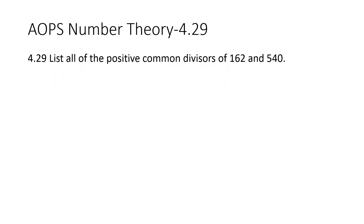ALPS number theory 4.29: list all of the positive common divisors of 162 and 540. Just like 4.28, we first prime factorize both of them together. They can both divide by 2, which makes them 81 and 270, and then divide by 3, which gives 27 and 90.